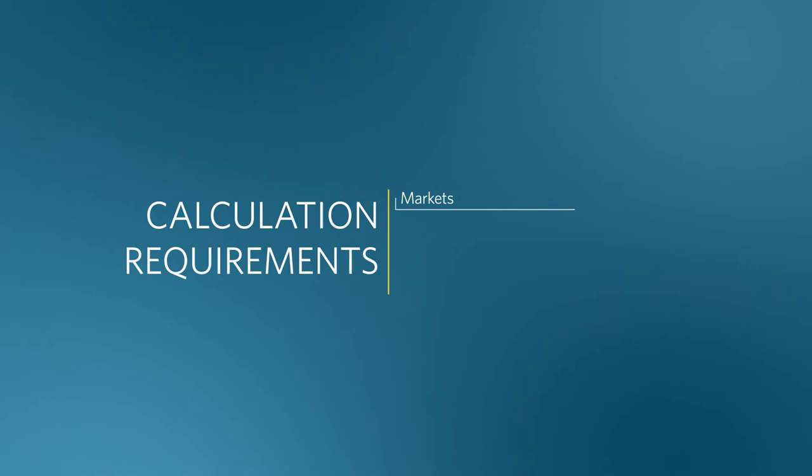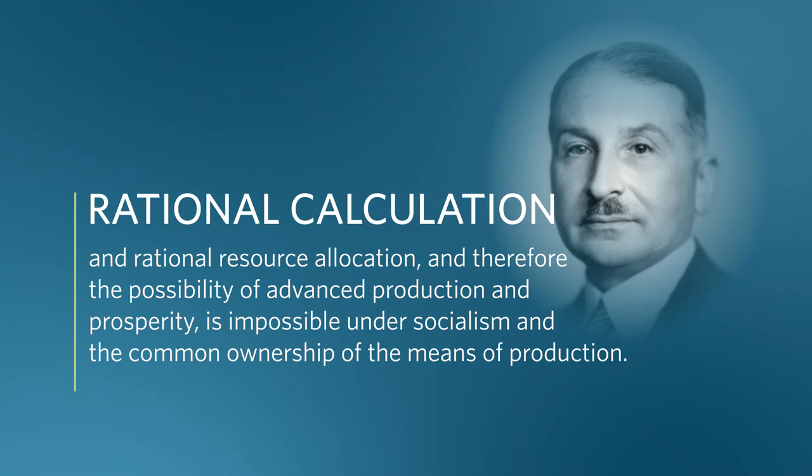But, Mises argued, if you want to have market prices to perform this comparative function, you need to have a market. And if you're going to have a market, people need to be able to exchange. And if they're going to exchange, they have to have private property — especially, he pointed out, in the means of production, that is, in capital goods. There can be no rational resource allocation without the ability to compare value. Doing so requires those market prices. And without private property in the means of production, there can't be exchange, there can't be markets, there can't be those market prices. Therefore, Mises concluded, rational calculation and rational resource allocation — and therefore the possibility of advanced production and prosperity — is impossible under socialism and the common ownership of the means of production.